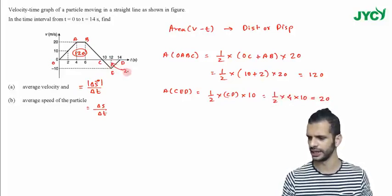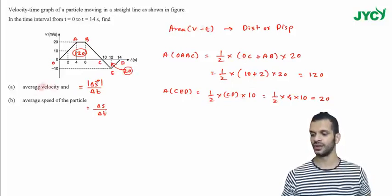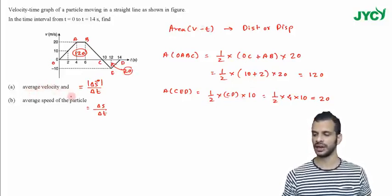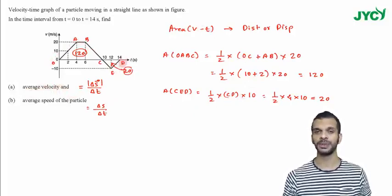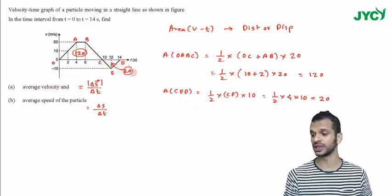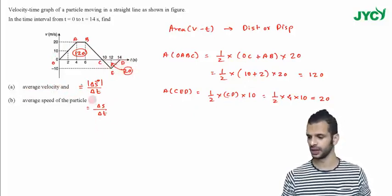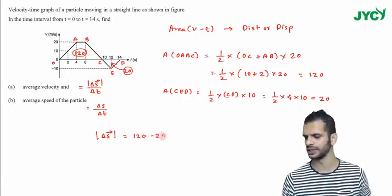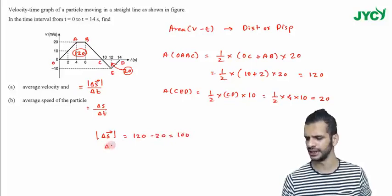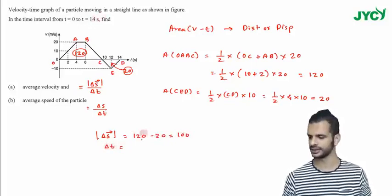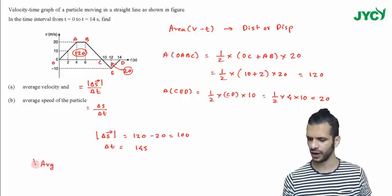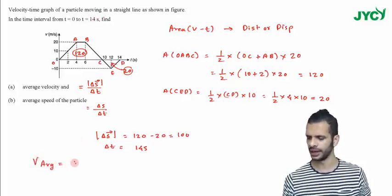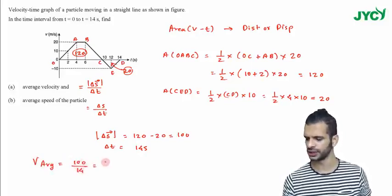So now the area of this particular graph is 20. For the average velocity I need displacement. The area is negative here, so now 120 minus 20, so my displacement magnitude is 120 minus 20 which is hundred. And delta T is 14 seconds. So my average velocity is equal to hundred by 14 which is 50 by 7 meter per second.